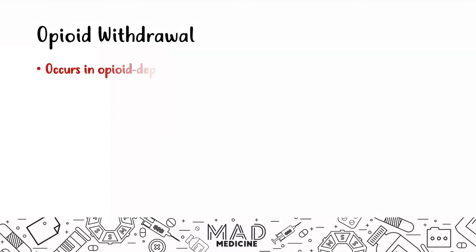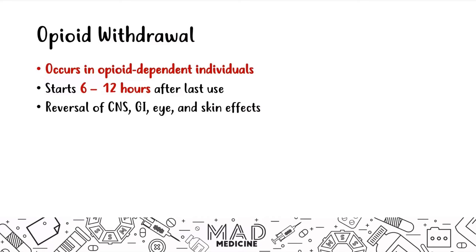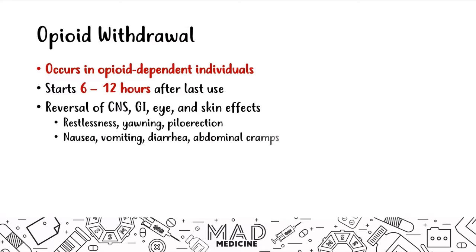Opioid withdrawal occurs in someone who is dependent on opioids, and it usually starts 6 to 12 hours after their last use. One easy way to remember opioid withdrawal is that it reverses everything happening in the CNS and PNS. Patients will feel restless, yawning, piloerection (hair standing up), nausea, vomiting, diarrhea, abdominal cramps, rhinorrhea, lacrimation, and flu-like symptoms. Note: in intoxication they're constipated; in withdrawal they have diarrhea.